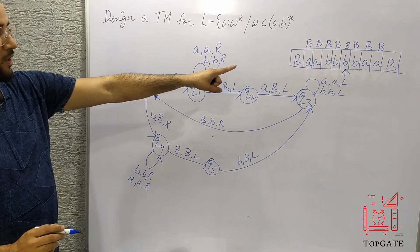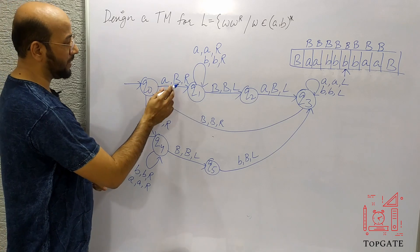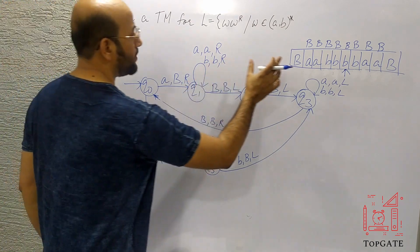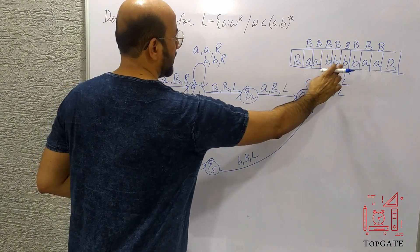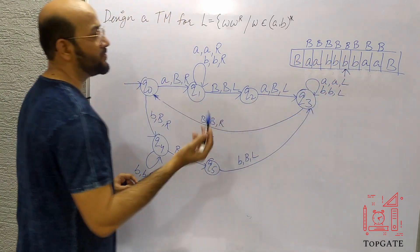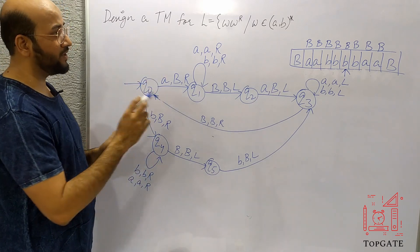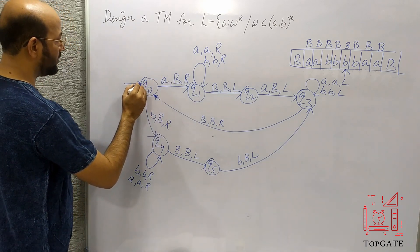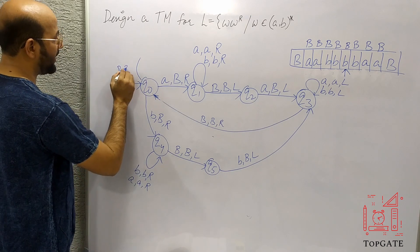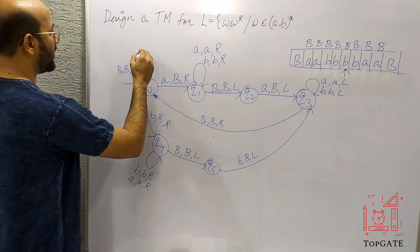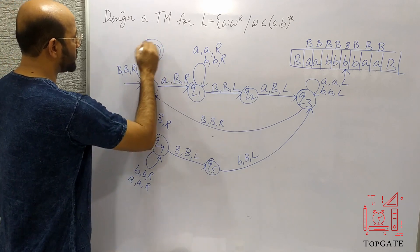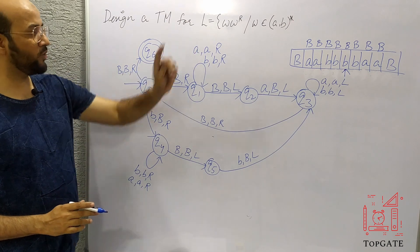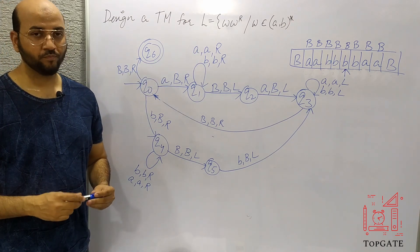Now at Q0, the pointer is on a capital-B. There is no move for A or small-B anymore — finding capital-B means both the W part and W^R part are completely matched. So I add a move: if you find capital-B, keep it as capital-B, go right, and transition to final state Q6 — which is the accepting state. This completes the Turing machine for the language L = {WW^R | W ∈ {A, B}*}. Thank you so much.